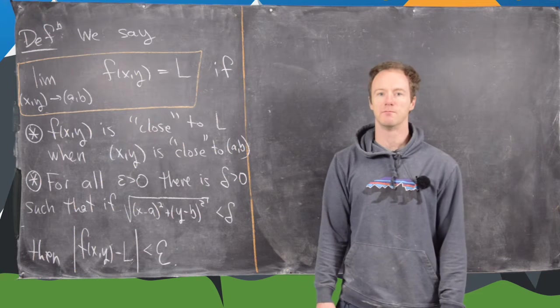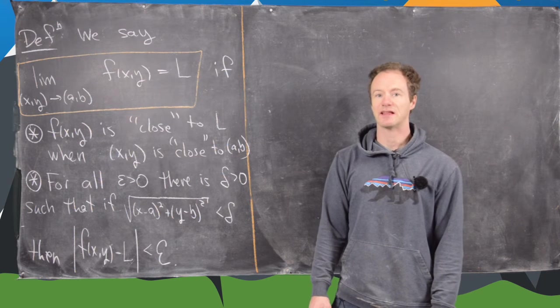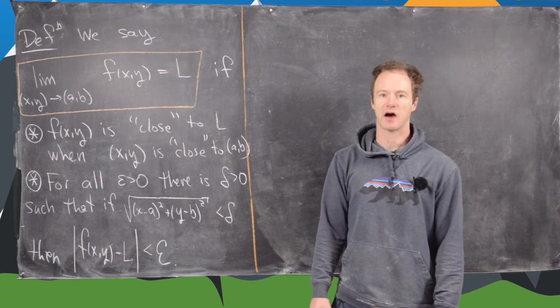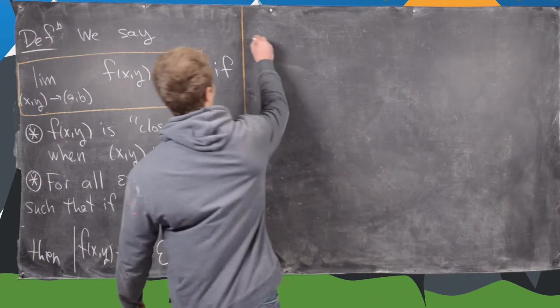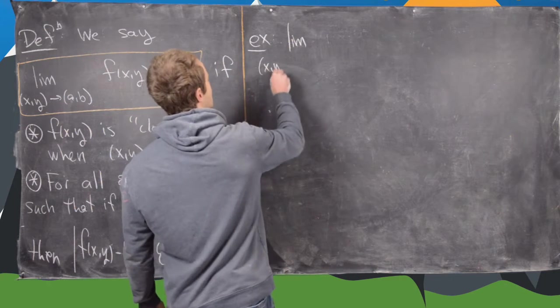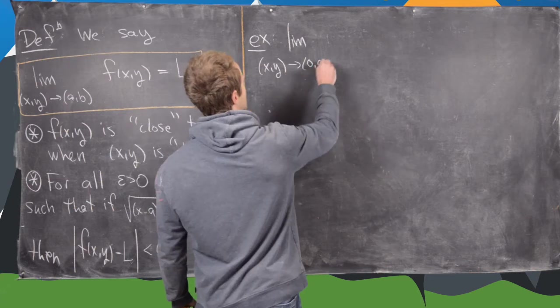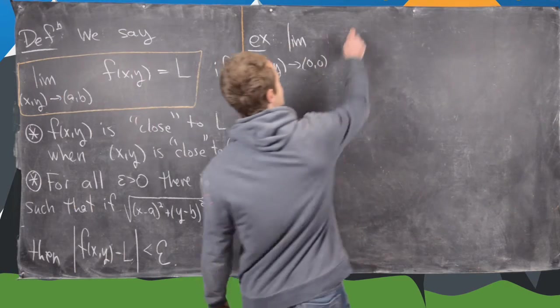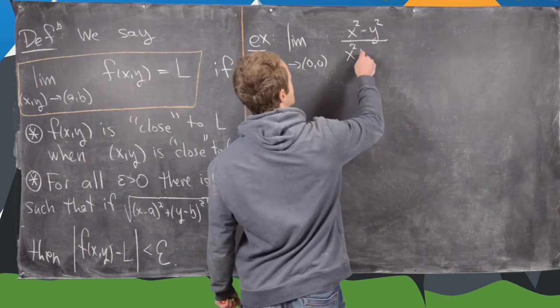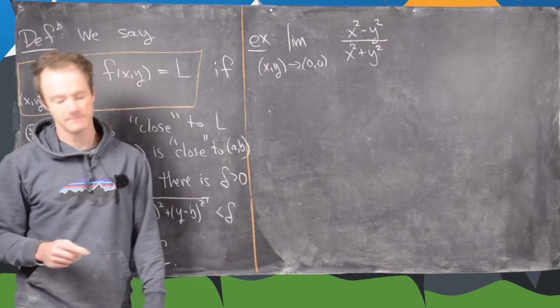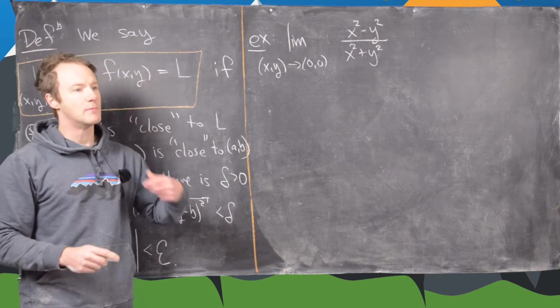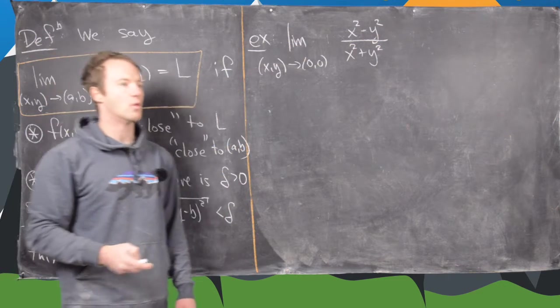For this video, we're mostly going to be concerned with showing that a limit does not exist, and in future videos we'll look at how to show that a limit does exist. So let's start with the following example. We'll take the limit as XY approaches the origin of X squared minus Y squared over X squared plus Y squared.